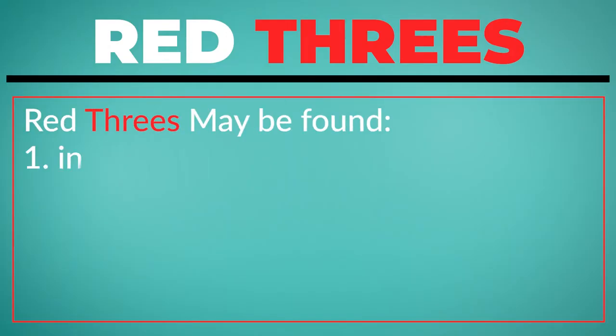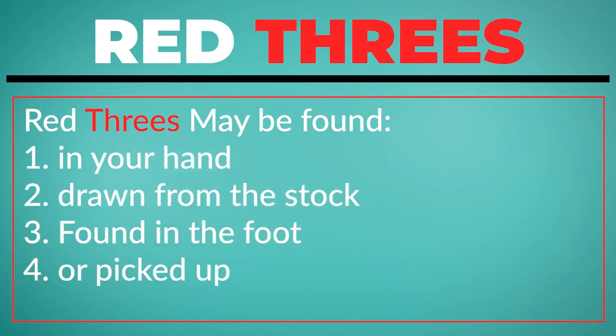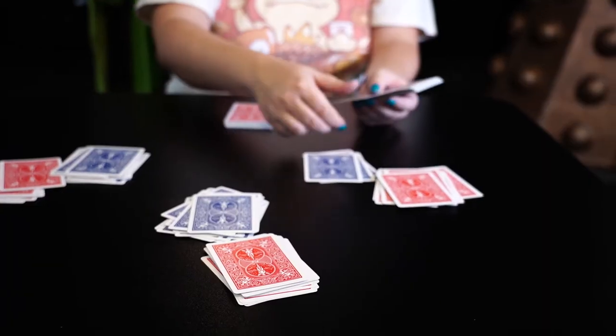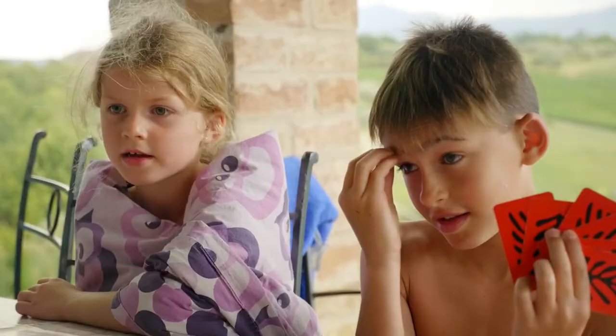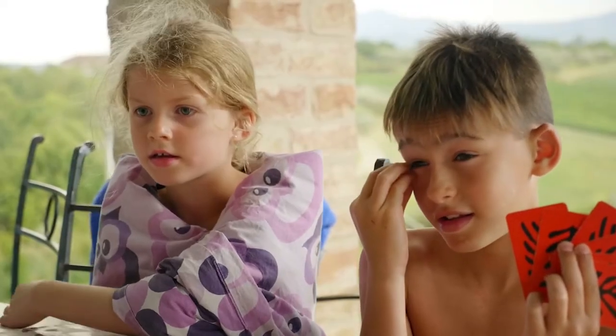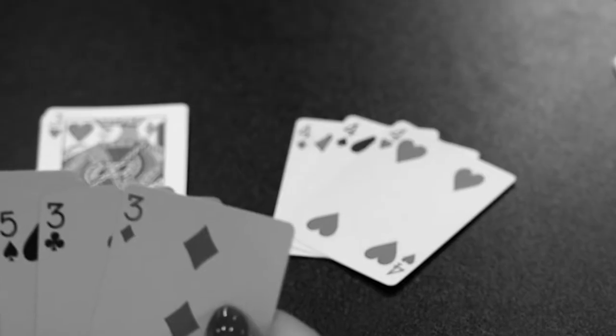Red threes may be found in your hand, drawn from the stock, found in the foot, or picked up from the discard pile. If your opponents go out before you have grabbed your foot and there is a red three present, that three counts against you.